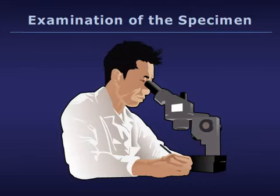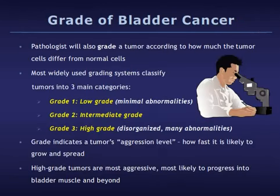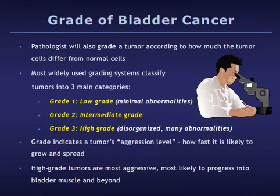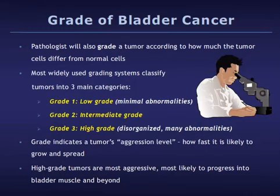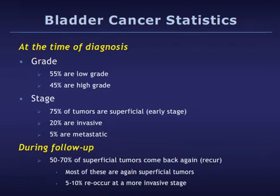The pathologist will confirm the diagnosis of bladder cancer and determine how deep into the bladder the tumor has grown. The pathologist will also grade the tumor according to how much the tumor cells differ in appearance from normal cells. The most widely used grading systems classify tumors into three main grades: low grade with minimal abnormalities, intermediate grade, and high grade, which consists of disorganized cells with many abnormalities. The grade indicates the tumor's aggression level — how fast it is likely to grow and spread. High-grade tumors are the most aggressive and most likely to invade the bladder muscle and beyond.